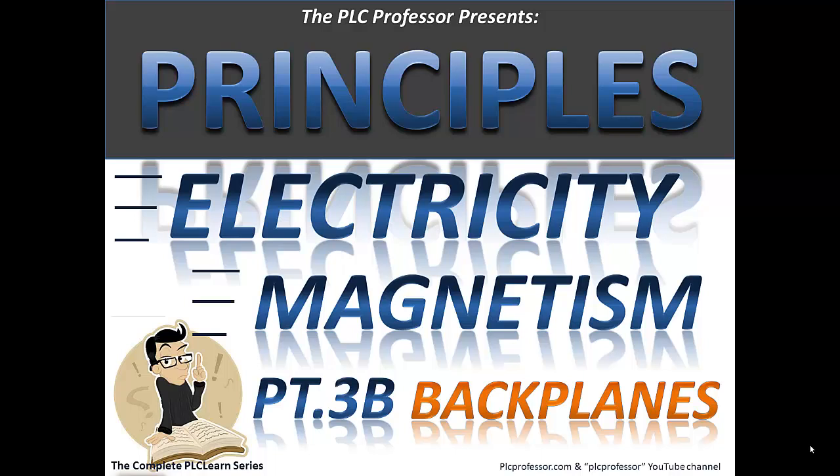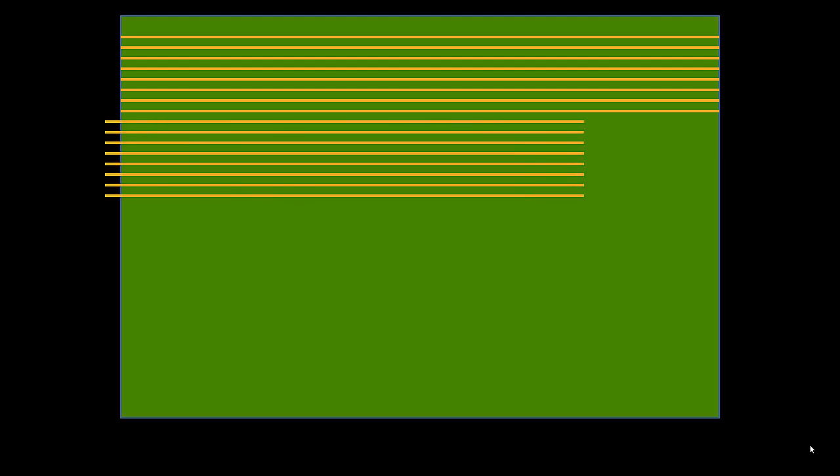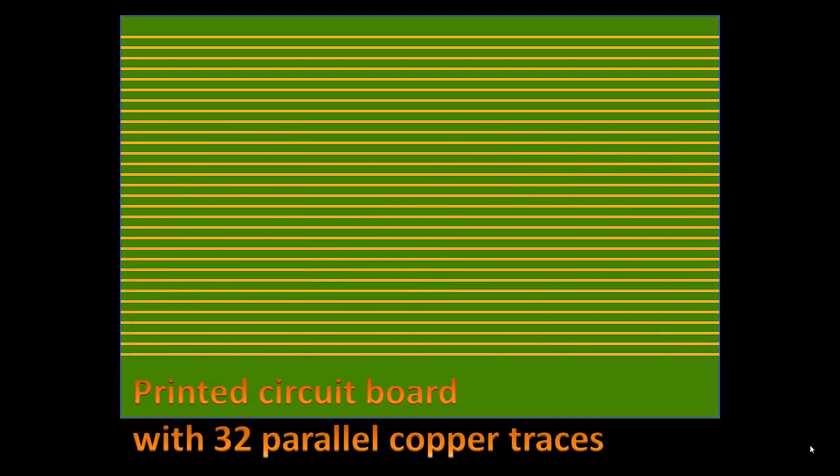Here we have a circuit card — a sheet of fiberglass. It's an insulator, and to this we add eight pieces of copper, each as long thin strips. To make it interesting, let's add another three groups of eight, which gives us a total of 32 copper traces.